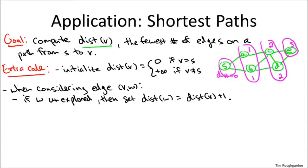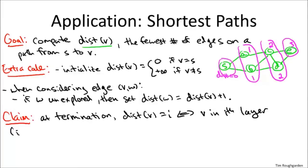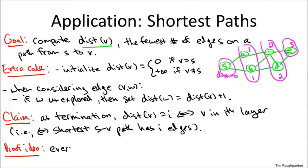I hope you find it easy to believe that this claim is true in general: the distance computed by breadth-first search for an arbitrary vertex V that's reachable from S equals I if and only if V is in the Ith layer. What does it mean to be in the Ith layer? It means the shortest path distance between V and S has I edges. I don't want to give a super rigorous proof, but let me give you the gist. I encourage you to produce a formal proof at home if that interests you.